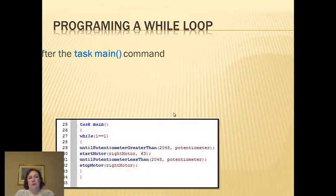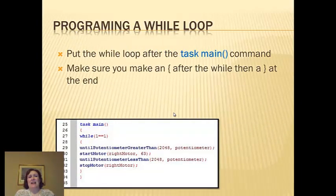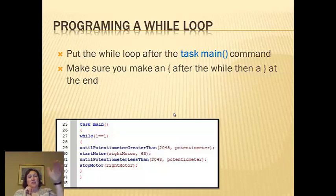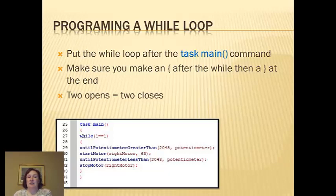Programming a while loop: you're going to put the while loop in after the task main. Make sure you put a curly bracket after the while loop, because a while loop is a structure inside of the task main. So: task main open, while loop open, type what you want in your while loop, close, and then close your task main. Just like in the picture here, where you can see I've got while(1==1), an open to show what's inside the while loop, and then a close to close the task main. Two opens equals two closes.